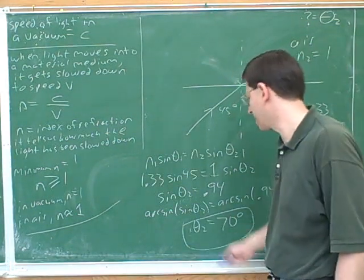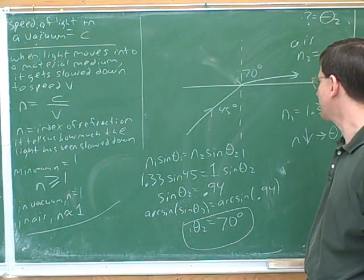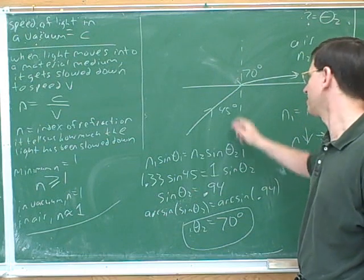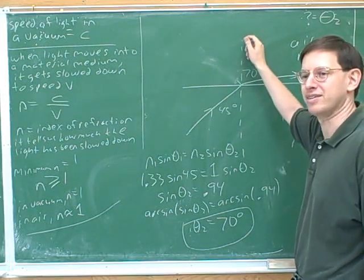Then we just work through the algebra here. That was a pretty straightforward question. The only tricky thing here is a lot of the time we do problems where the light starts above and goes below. Here it was starting below and going above, but we should be able to handle that.